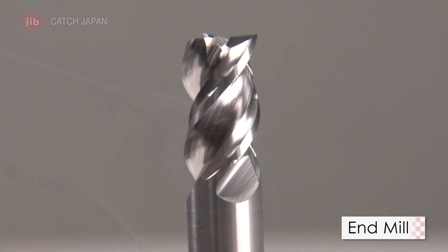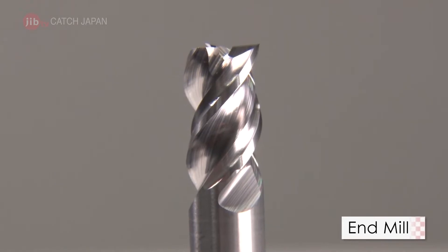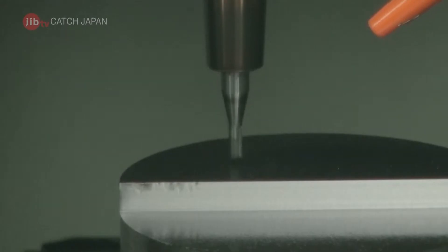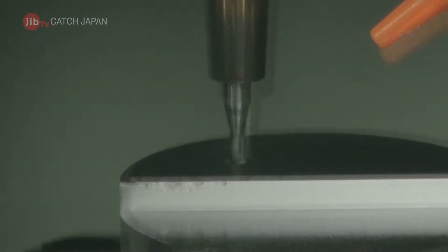This unseen miracle worker is the end mill. The end mill can open vertical holes like a drill, but also move horizontally to shave away edges.